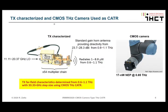On the left you see the TX characterized, and on the right the CMOS Terahertz camera used as CATR. The source radiates 1 to 8.8 microwatts from 0.6 to 1.1 terahertz, and the antenna provides in this frequency range a directivity between 23.7 and 28.3 dBi. We characterized the source across the entire band with 33.33 gigahertz step size using the CMOS Terahertz camera. The camera has an NEP of 17 nanowatt at 0.85 terahertz, and in video mode, frame averaging can improve the sensitivity performance even further.